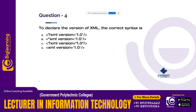To declare the version of XML, the correct syntax is shown. We can write the first line in the correct syntax. The answers are A and C — both are correct syntax. The difference is that one uses single quotes and the other uses double quotes. Normally we can use XML with double quotes, but single quotes are also valid. The answer option is C.